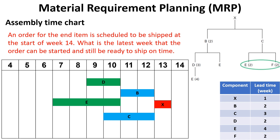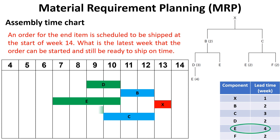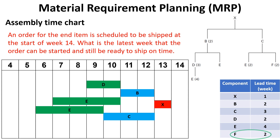The same for subassembly C — it needs items E and F to be assembled. Item E lead time is four weeks, so going backward from week 10 start by four weeks means that the order of item E must be released at the beginning of week 6. For item F, the lead time is two weeks, so going backward from week 10 start by two weeks means that the order of item F must be released at the beginning of week 8.